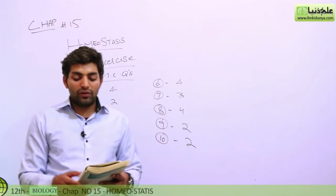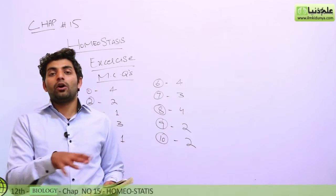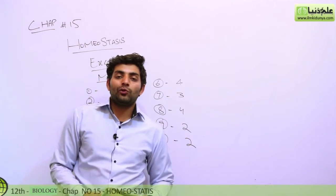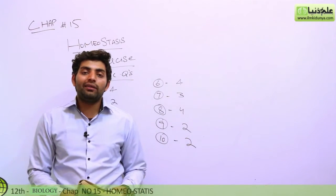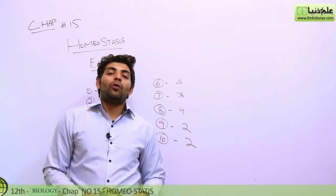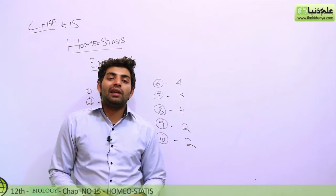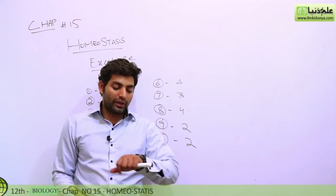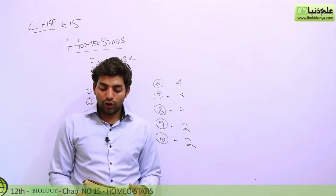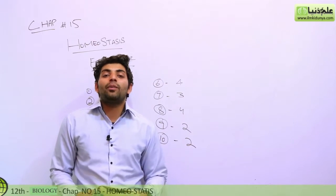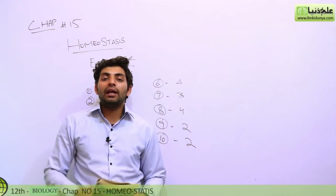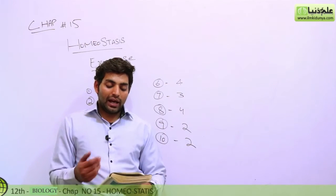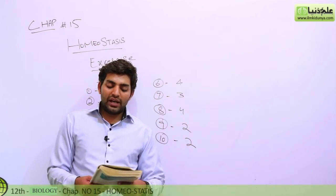Now for short questions: differentiate between osmoconformers and osmoregulators. Osmoconformers allow their body water level and ionic concentration to match the external environment, while osmoregulators maintain internal balance. Anhydrobiosis is an example of an organism tolerating extreme dehydration.